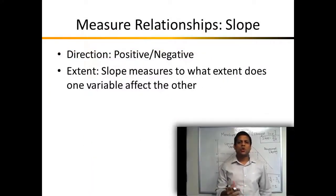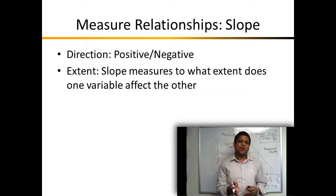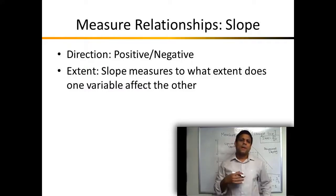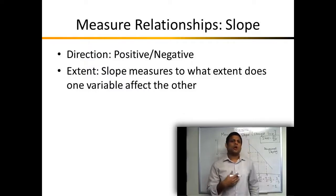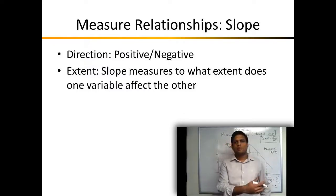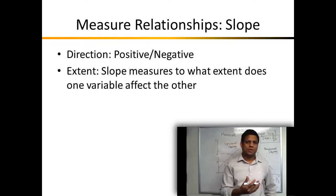Oftentimes, we are interested not only in the direction of the relationship between two variables — whether they are positively or negatively related — but we would also like to know the extent of influence of one variable on the other. In order to measure to what extent one variable affects the other, we can look at the slope of the relationship between the two variables.